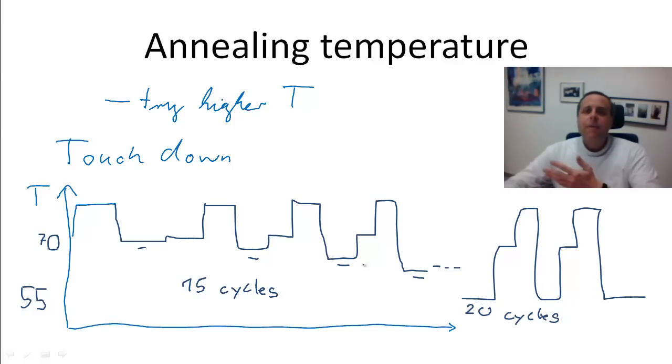You start amplifying that. You double it with each cycle, and only much later the non-specific binding might still occur. But at that time, you have already accumulated a lot of the specific PCR product, and this will now out-compete the non-specifically primed product. And that's why the touchdown PCR protocol is such a successful protocol.